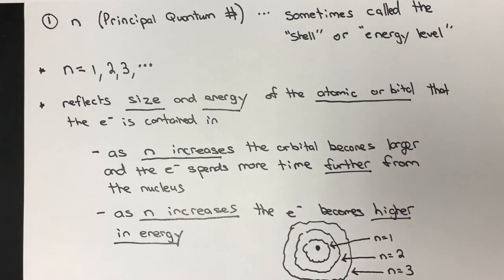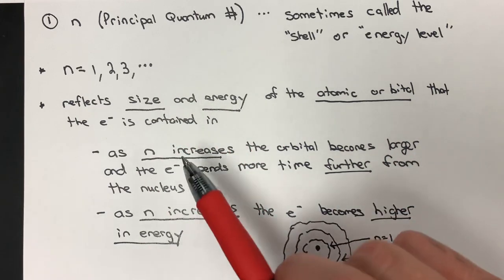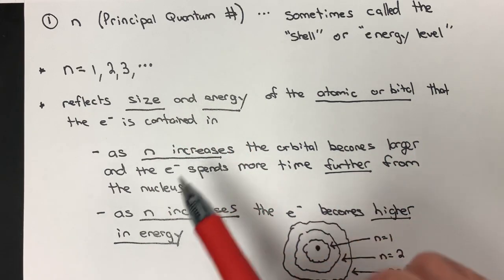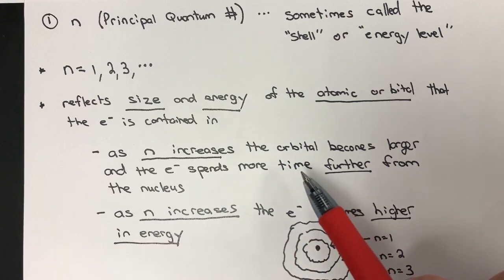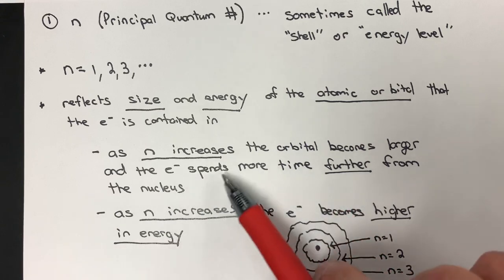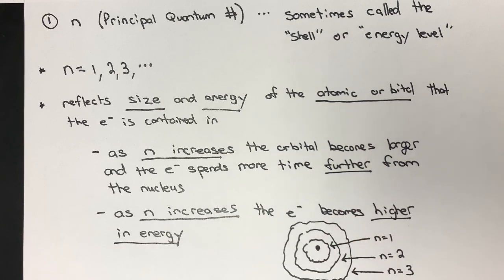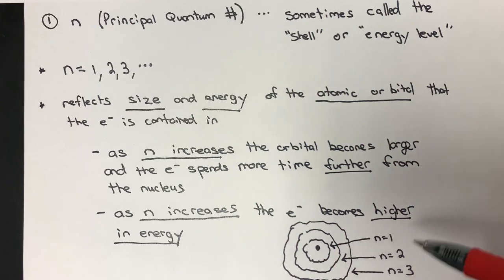As far as size goes, we're going to see that as n increases, the orbital becomes larger — the electron is going to spend more time further away from the nucleus.